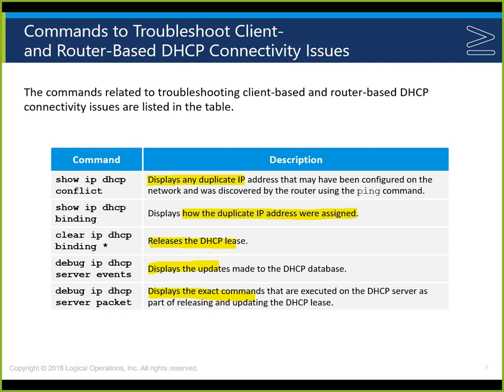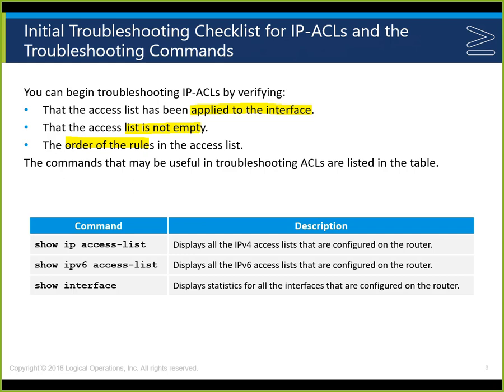Key commands for troubleshooting DHCP connectivity: 'show ip dhcp conflict' displays duplicate IP addresses discovered using ping; 'show ip dhcp binding' shows how addresses were assigned; 'clear' the binding to release the DHCP lease. 'Debug ip dhcp server events' displays updates, and 'debug ip dhcp packet' shows server packets. In our case with the process taking all addresses, we just had to go in and clear the leases to get them back.